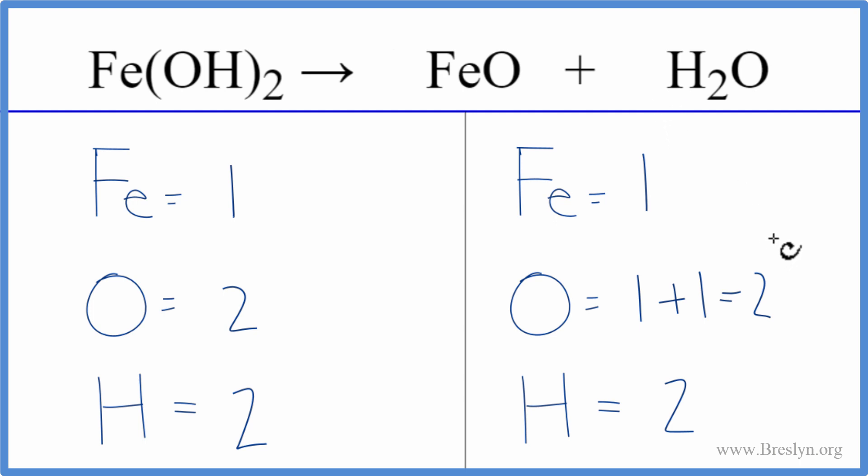Where people have problems with this, this 2, it applies to everything in parentheses. Make sure you do that. Then the other places, they'll count this oxygen, and they'll forget about this one. So this is the balanced equation for iron 2 hydroxide breaking apart into iron 2 oxide and water.